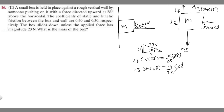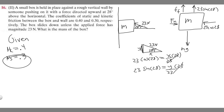Now let's write down what we're given. We know the coefficients of kinetic and static friction: mu sub k and mu sub s. Static is 0.4 and kinetic is 0.3. The one we're actually going to use in this problem is static, because we're keeping the box still — it isn't moving. If the box were moving, we'd use kinetic. So we only need to focus on the static coefficient.